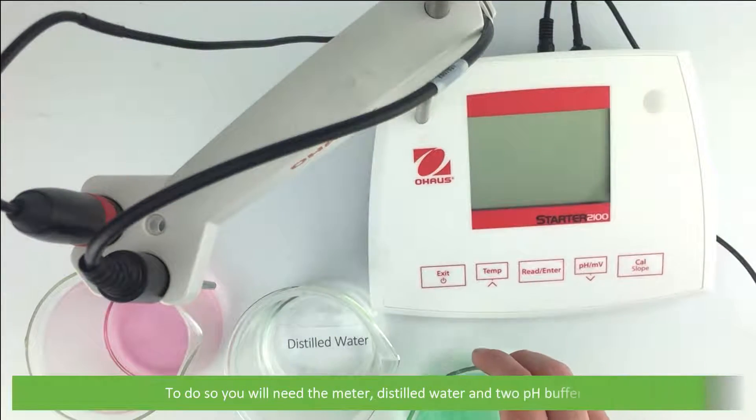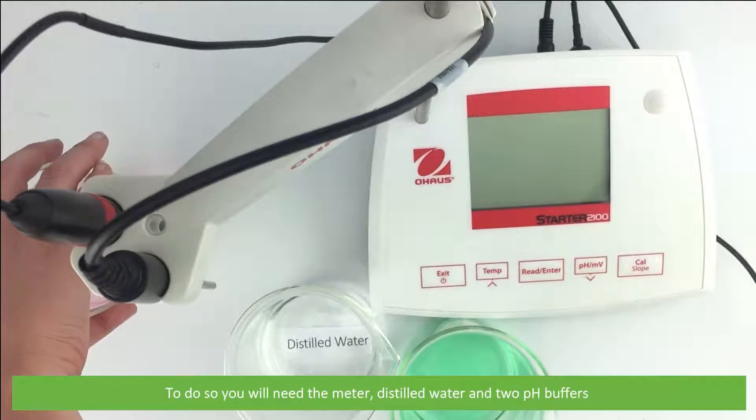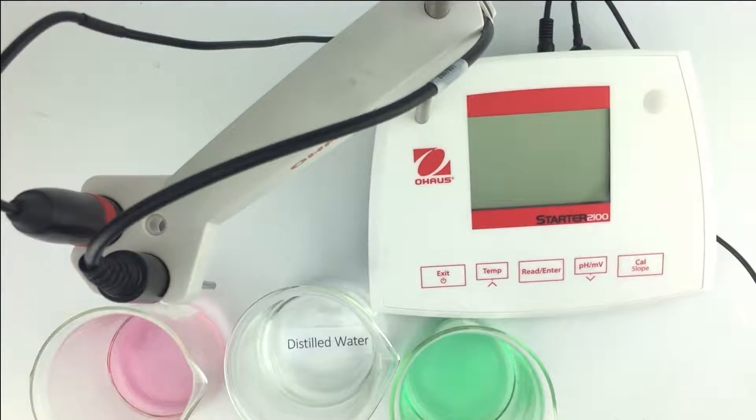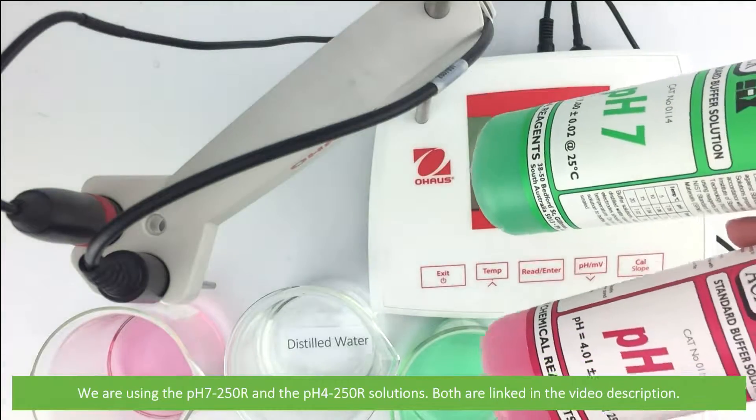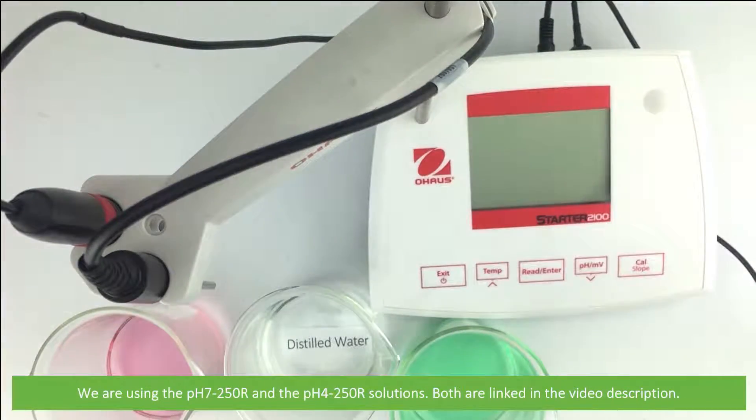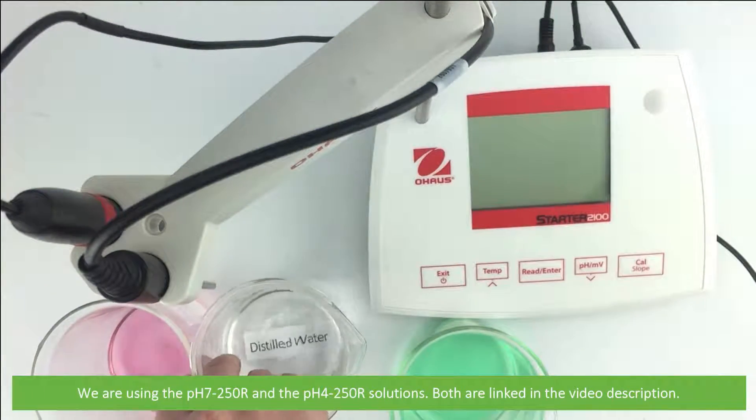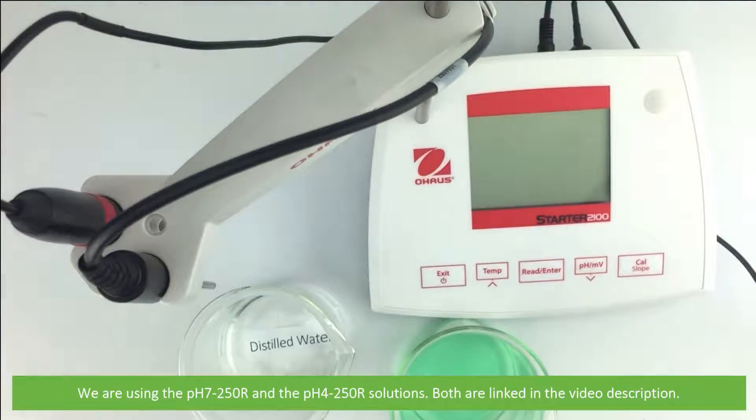To do so you will need the meter, distilled water and two pH buffers. Here we are using the pH 7-250R and the pH 4-250R solutions. Both are linked in the video description.